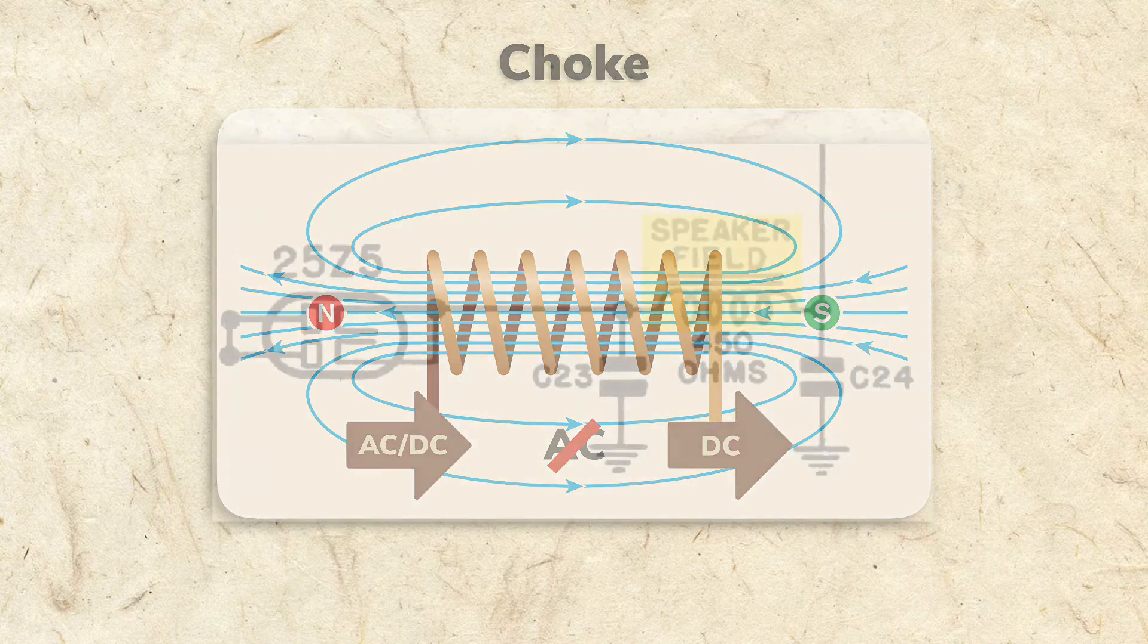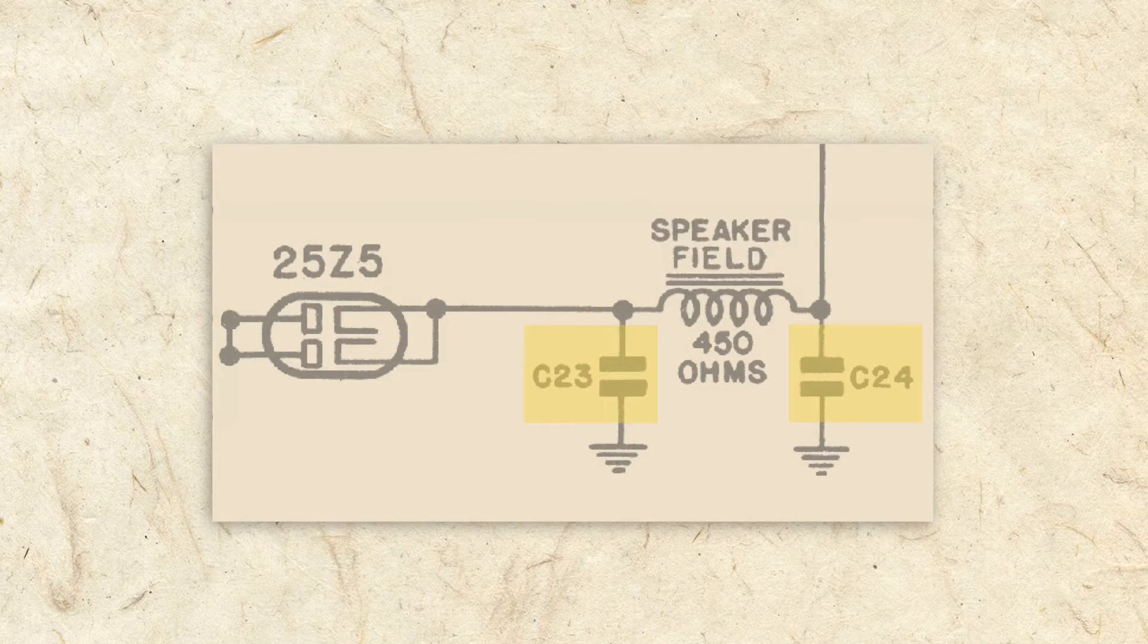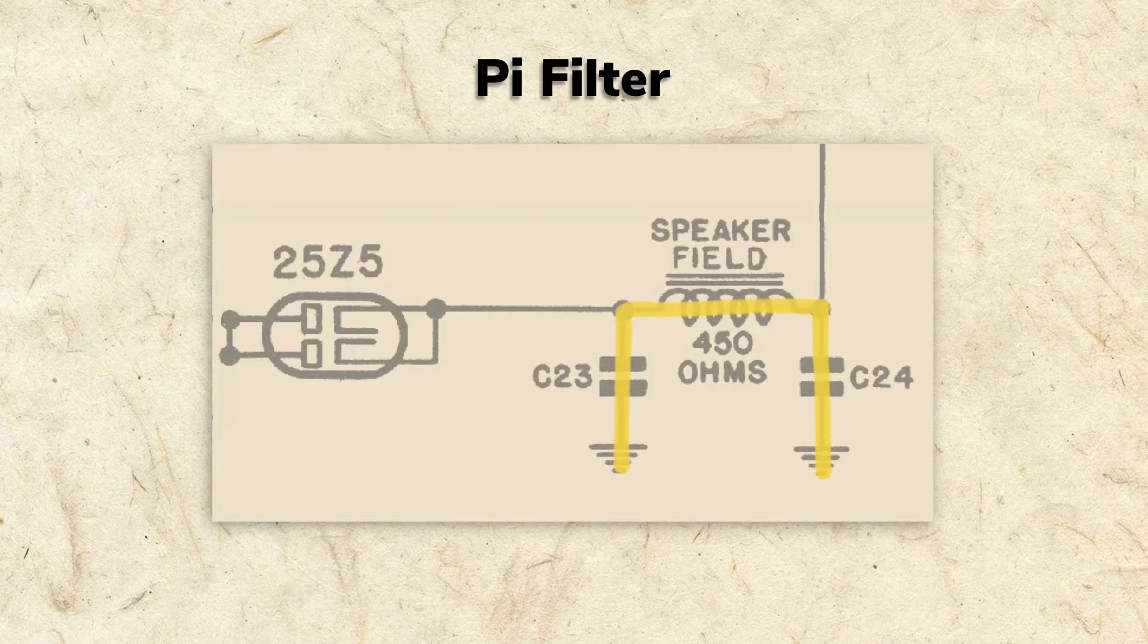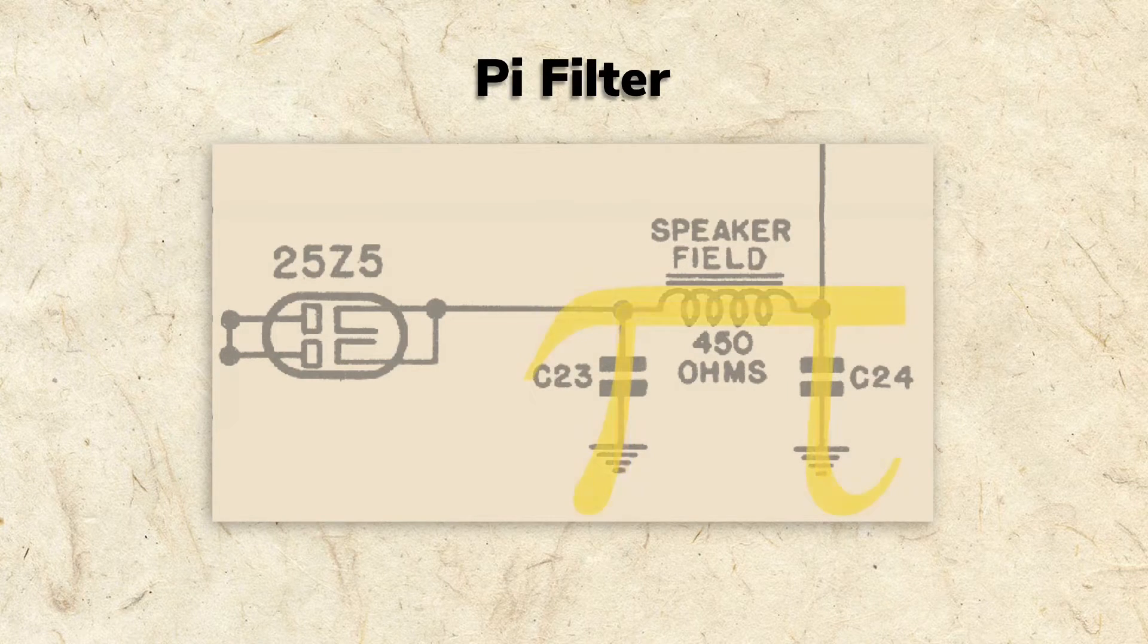The field coil choke works with the two electrolytics to create a circuit called a pi filter. It's called a pi filter because it resembles the Greek letter pi.